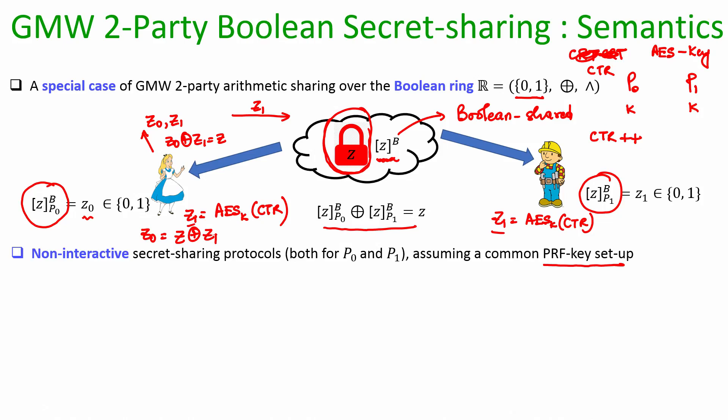These kinds of tricks can be used in practice when implementing MPC protocols, assuming the AES key setup: the communication of Alice's share to Bob can be completely avoided in secret sharing instances where Alice is playing the role of the dealer. Similar steps can be executed if Bob wants to secret share a value.